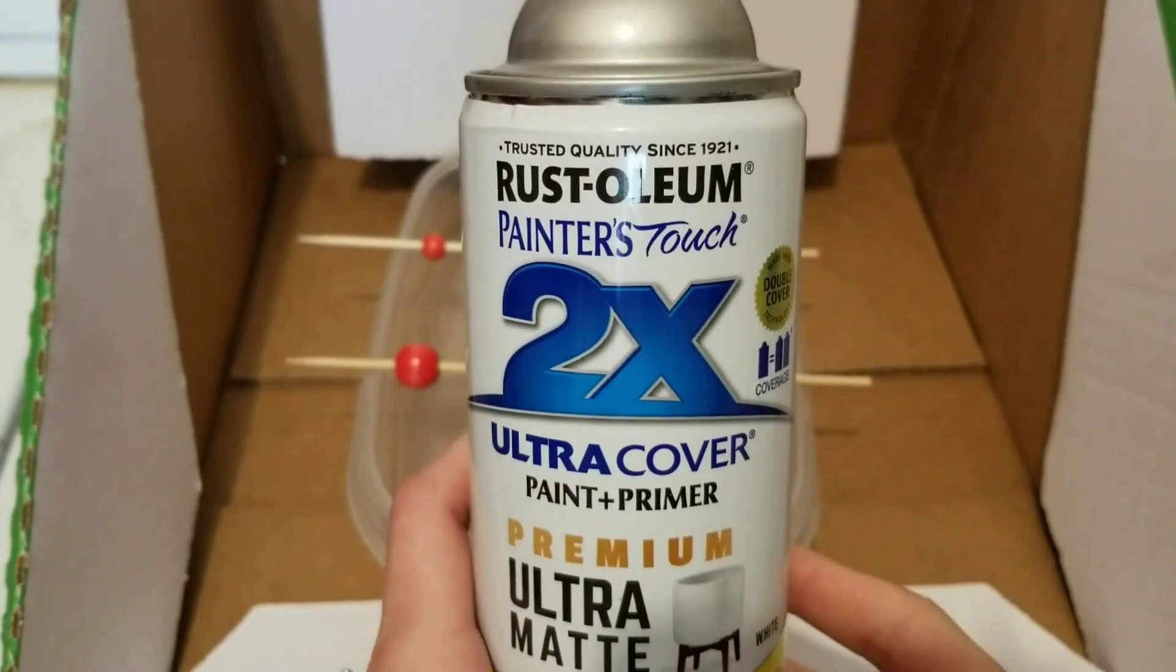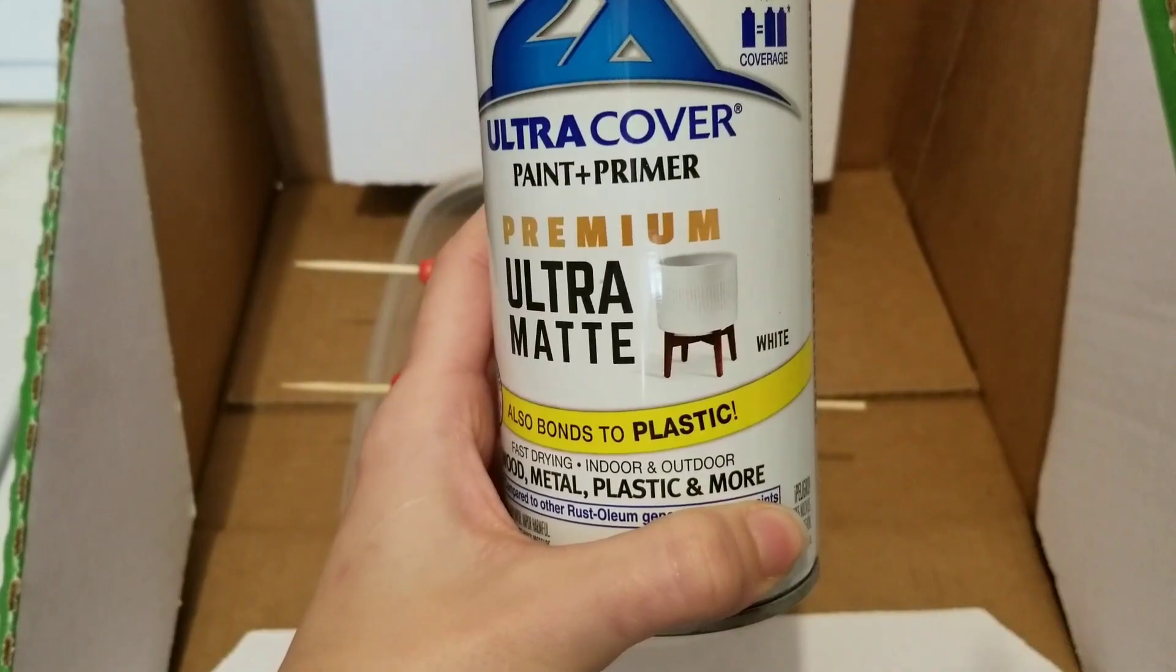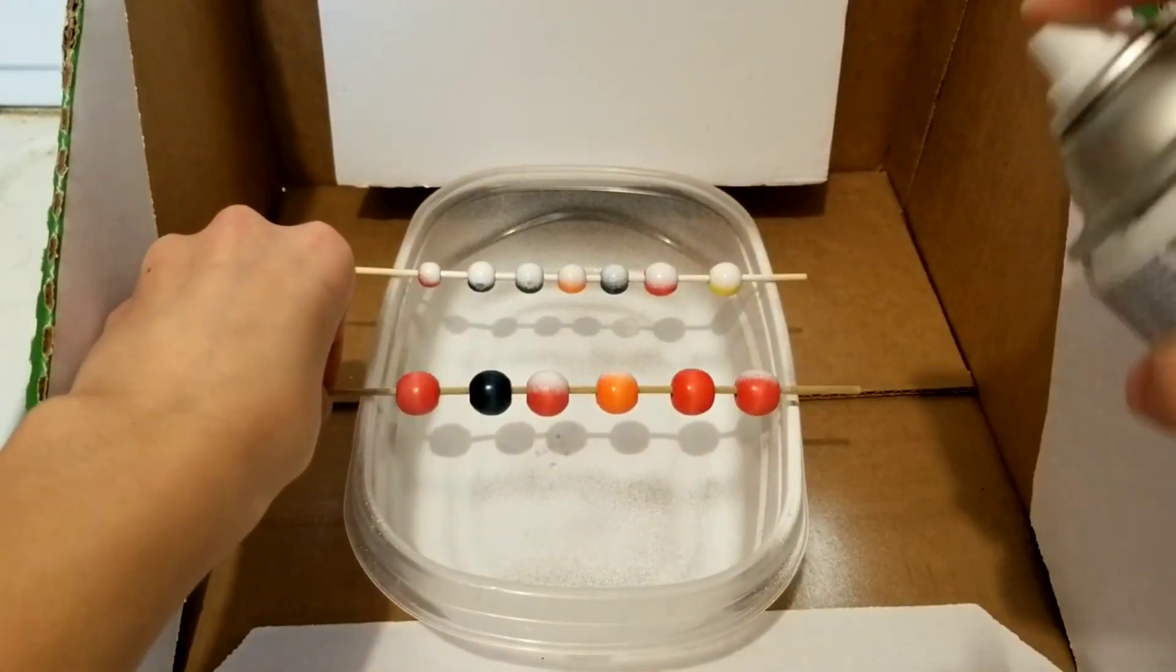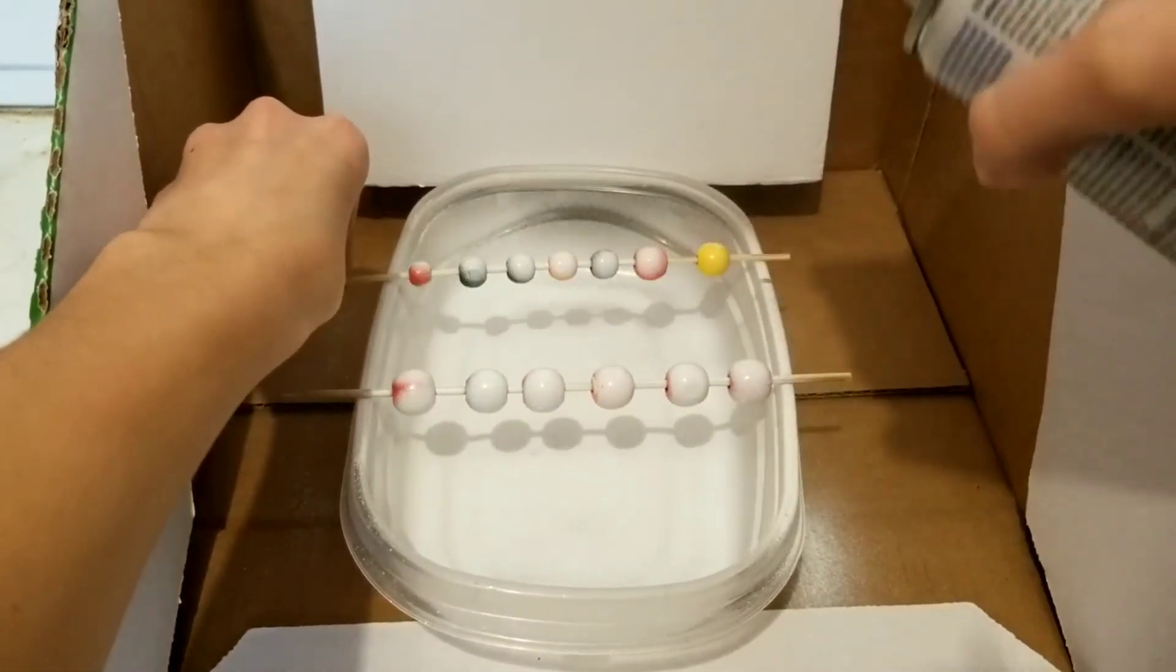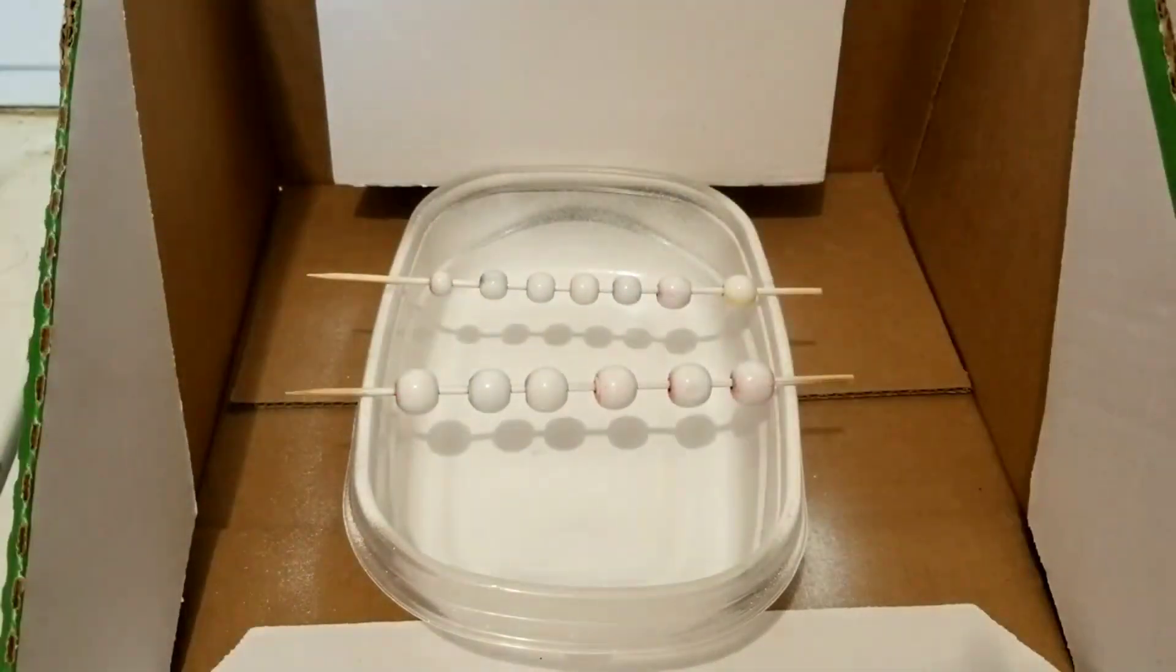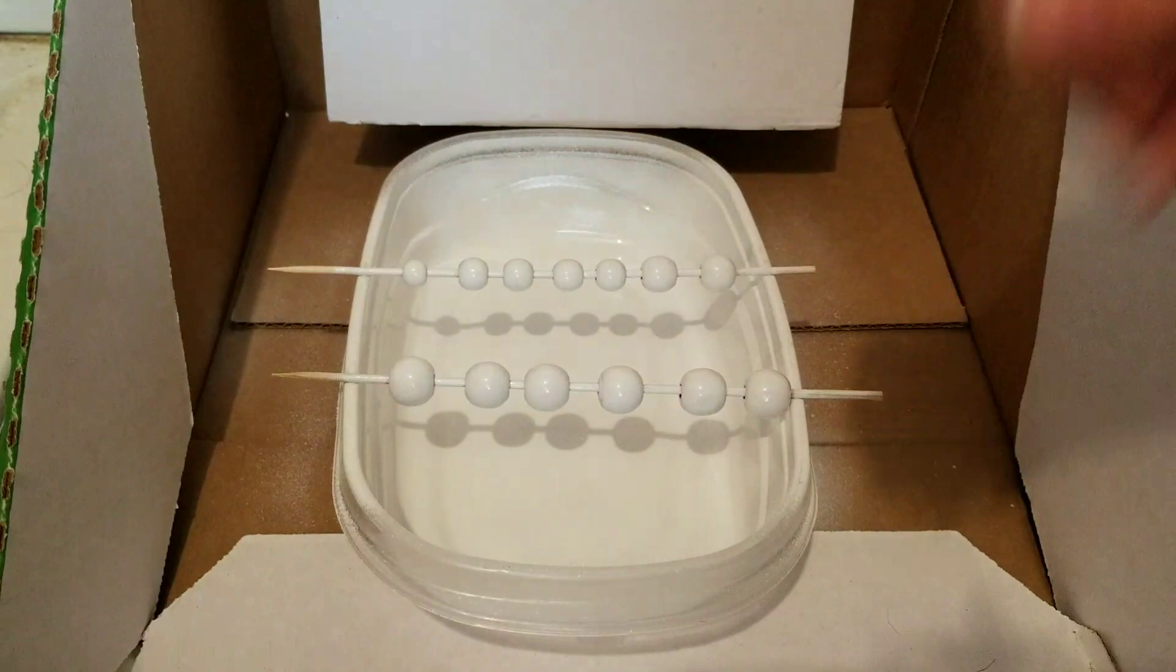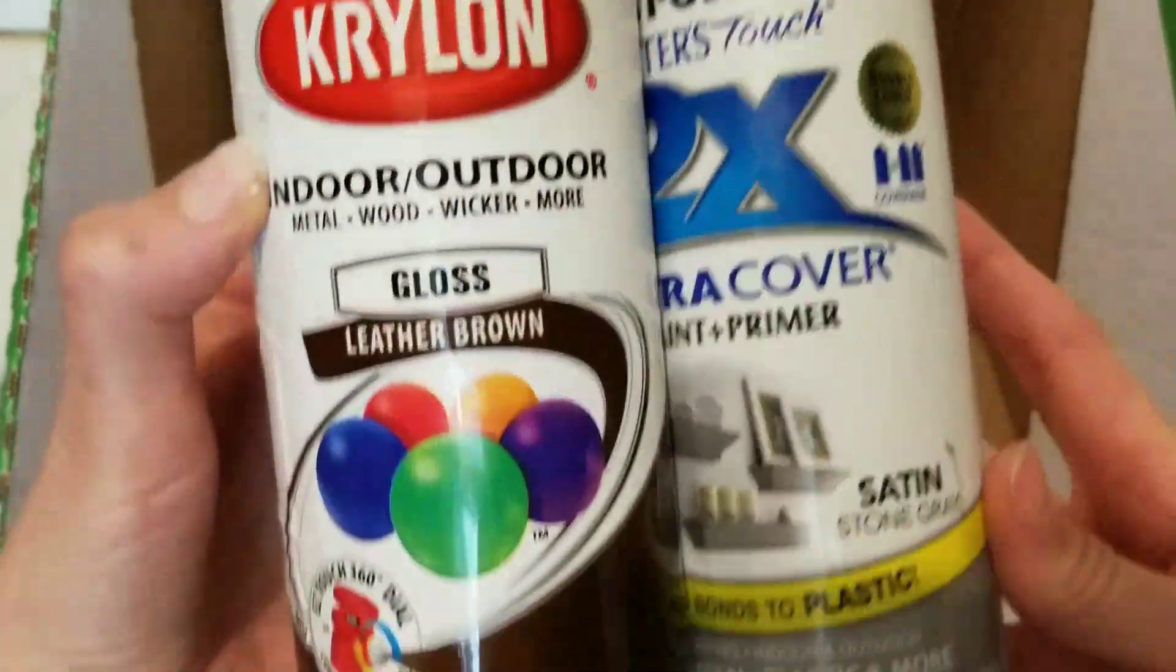I spray painted all of my beads with this ultra matte white color. You can hand paint these as well. I had them on these skewers so that I could spin them and paint all the sides at once. And I did add two coats of spray paint to these. For two of these smaller beads that are going to be for the heads of my animals, I'm going to paint one in a brown color and then one in a gray color.